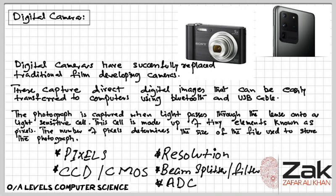CCD sensors have been mass produced for a longer period of time, so they are more mature and tend to have higher quality pixels and more of them. Although numerous differences exist between the two sensors, they both play the same role in the camera: they turn light into electricity and digitize the whole capture.